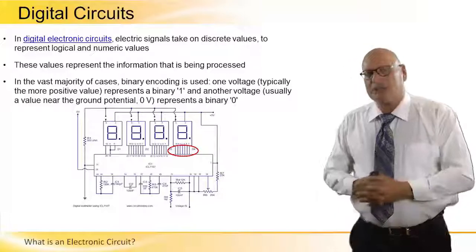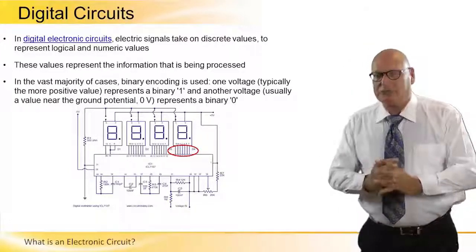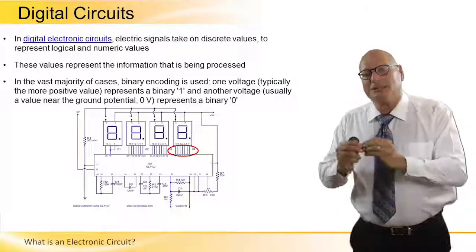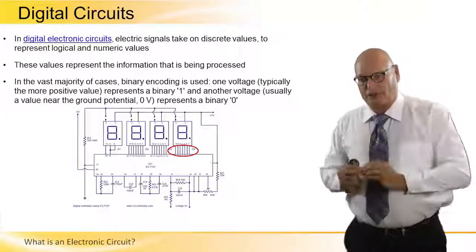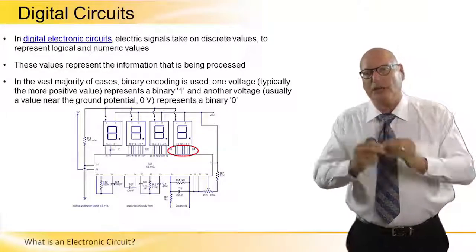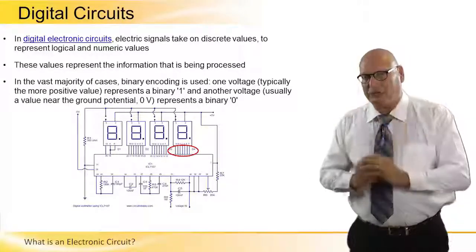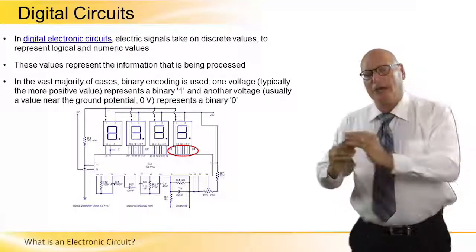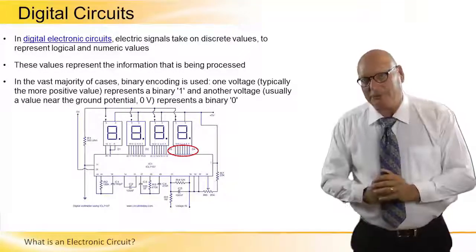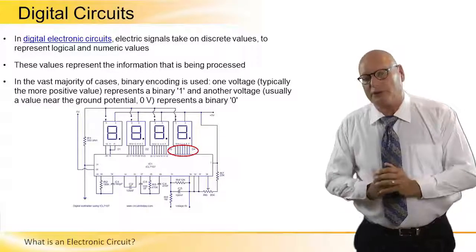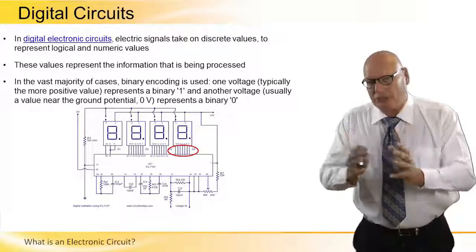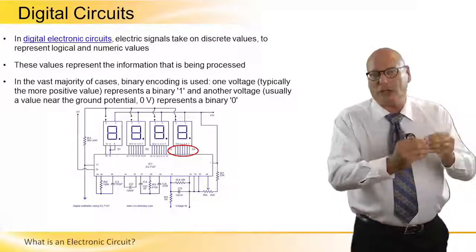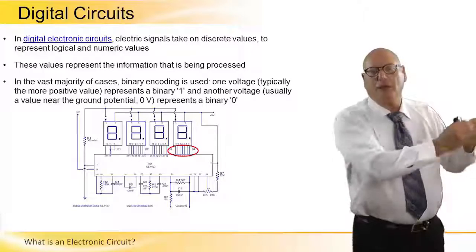Now let's look at digital circuit. In digital electronic circuits, electric signals take on discrete values to represent logical and numerical values. Discrete values. Basically we are talking about two discrete values, high and low. This is written kind of that in the third paragraph. In positive logic, we look at one logic as high equal five volts.